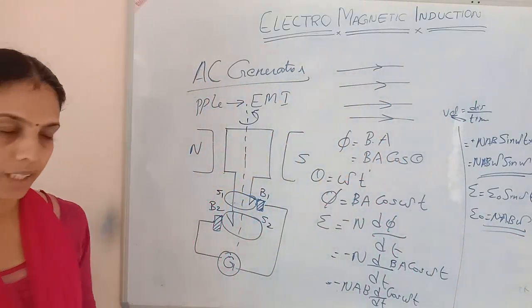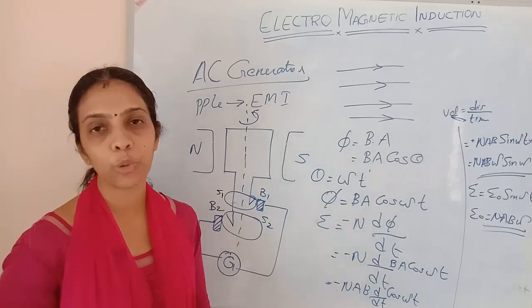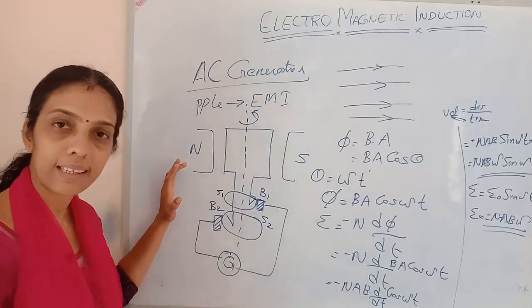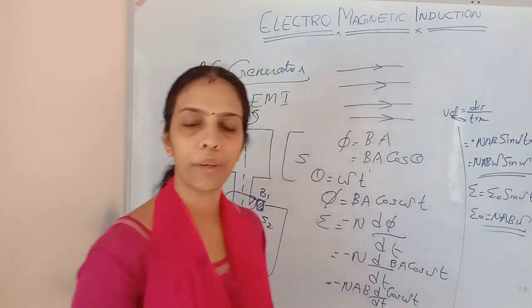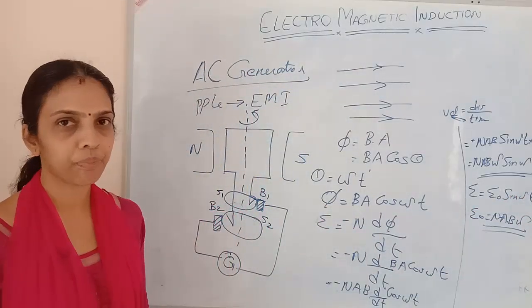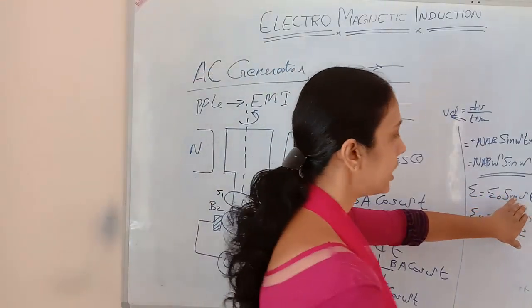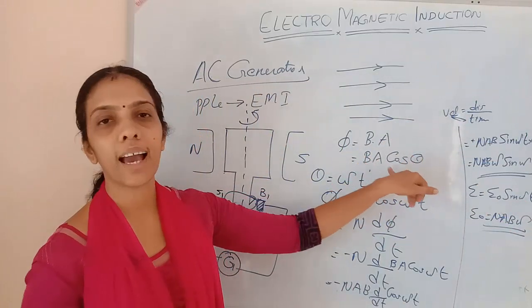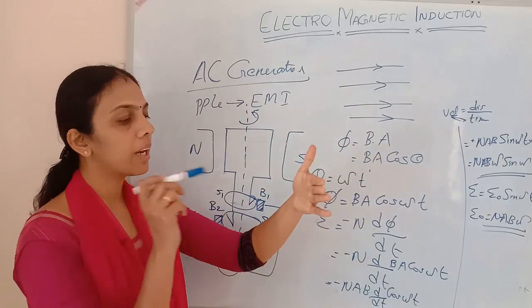E₀ = NABω is the peak EMF. This is the magnetic flux formula, and this is the EMF induced in the coil of the AC generator: E = NABω sin(ωt). Now, how does it become AC? We need to understand this. ωt is θ, the angle between B and A vectors. Initially, suppose the coil is perpendicular to the magnetic field.